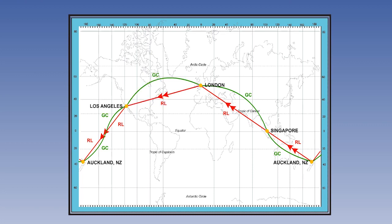Let's take the London to Los Angeles leg. The initial angle between the great circle and the rum line is, of course, conversion angle. Conversion angle is half change of longitude times sine mean latitude. London is on the Greenwich Meridian; Los Angeles' longitude is about 120 west. So half of 120 degrees is 60. London's latitude is about 52 north, whereas LA is about 34 north, so the mean latitude is about 45 north. Sine 45 is about 0.7. Multiplying out, the conversion angle should be about 42 degrees. Now have a look at the diagram again, and you'll see that it's about right.